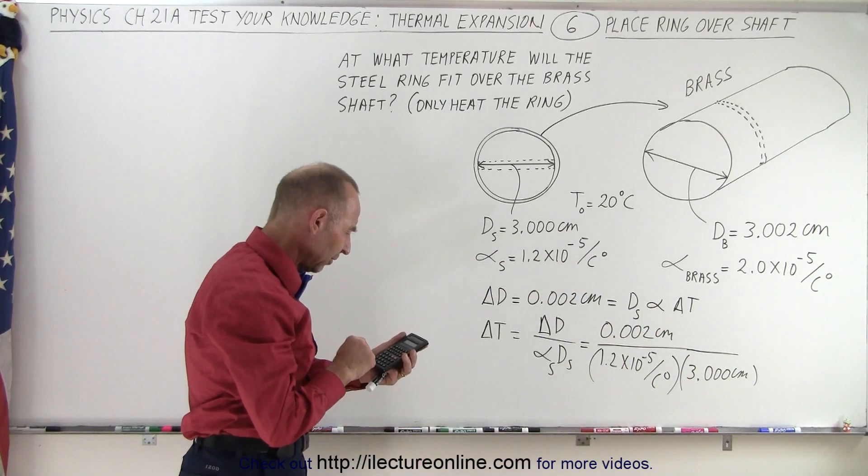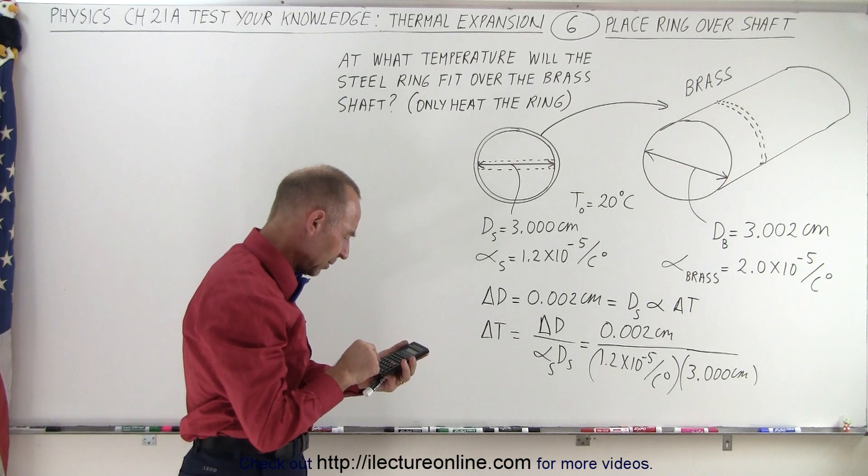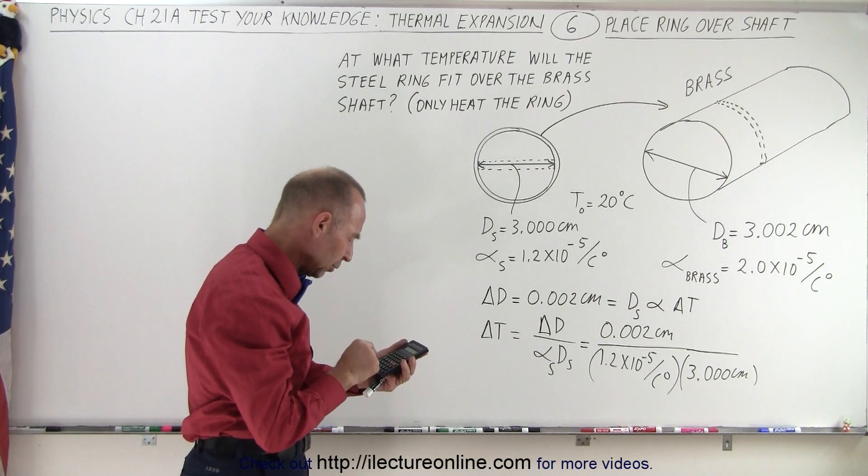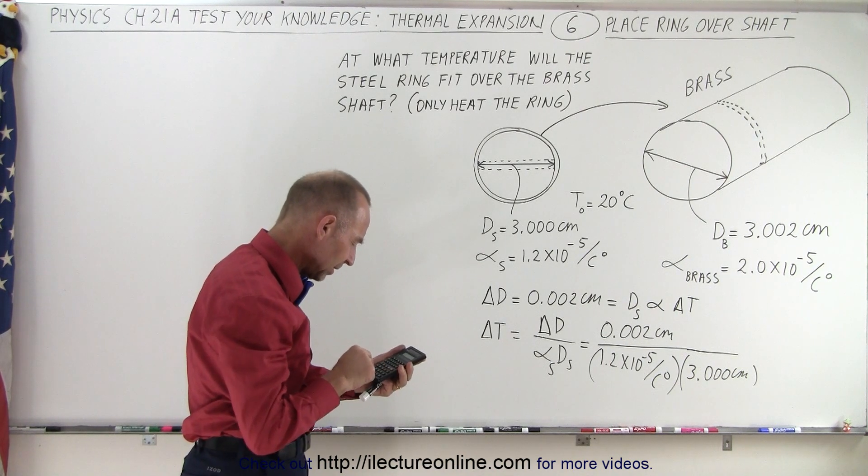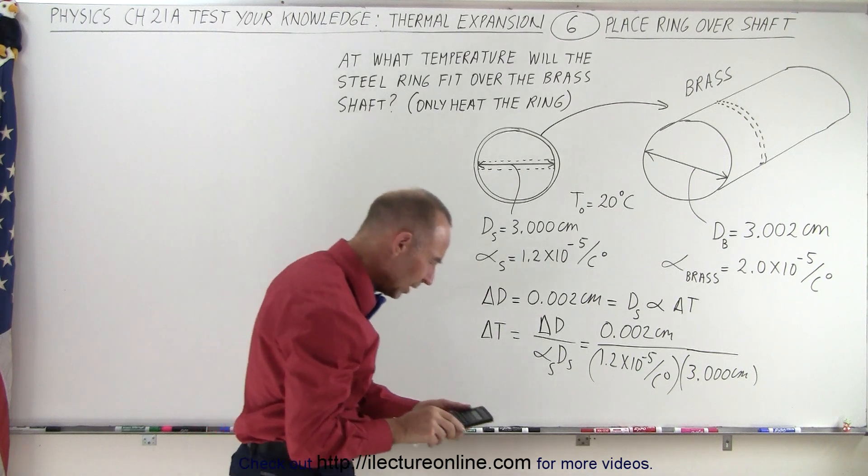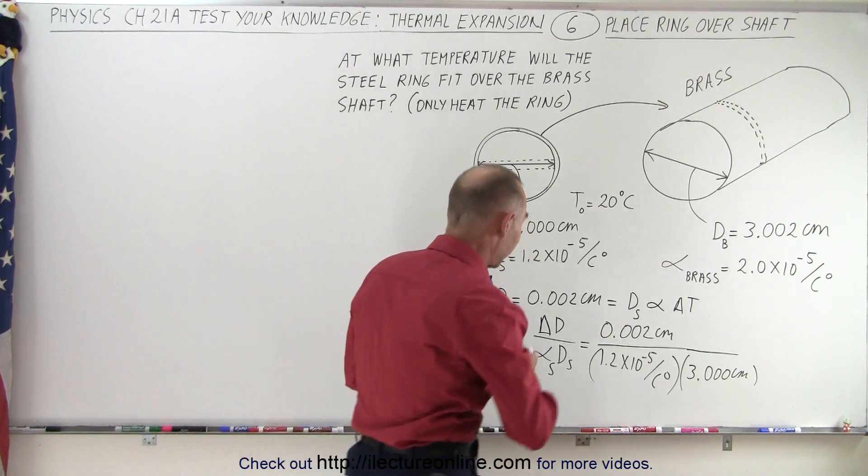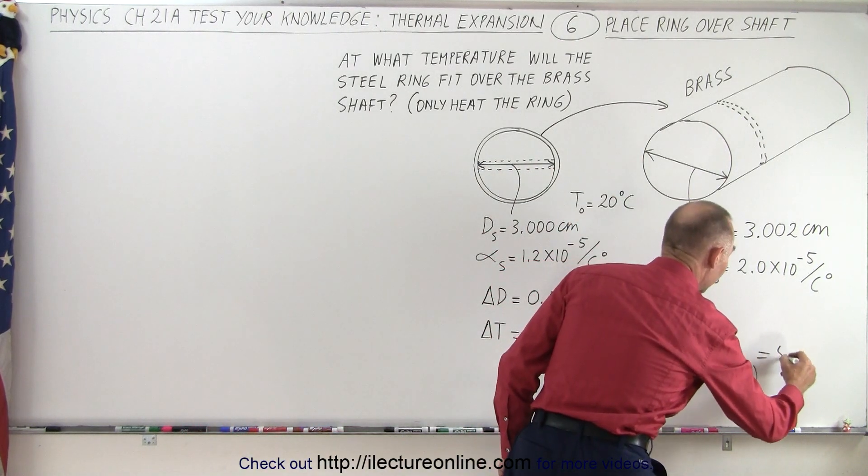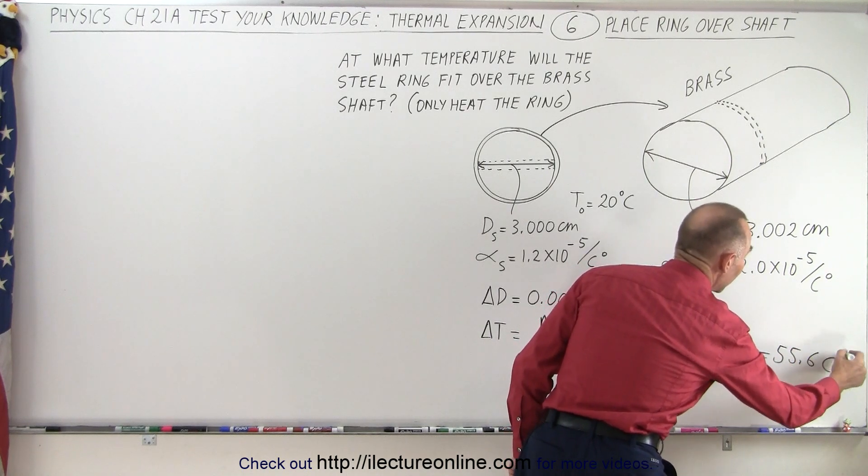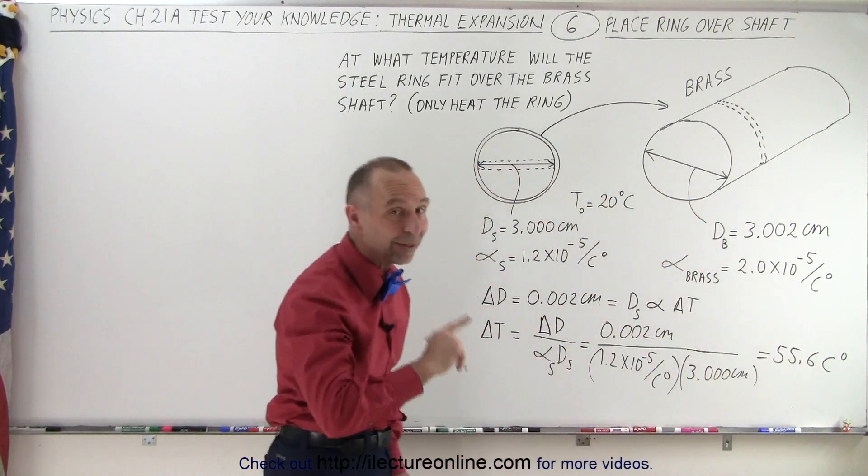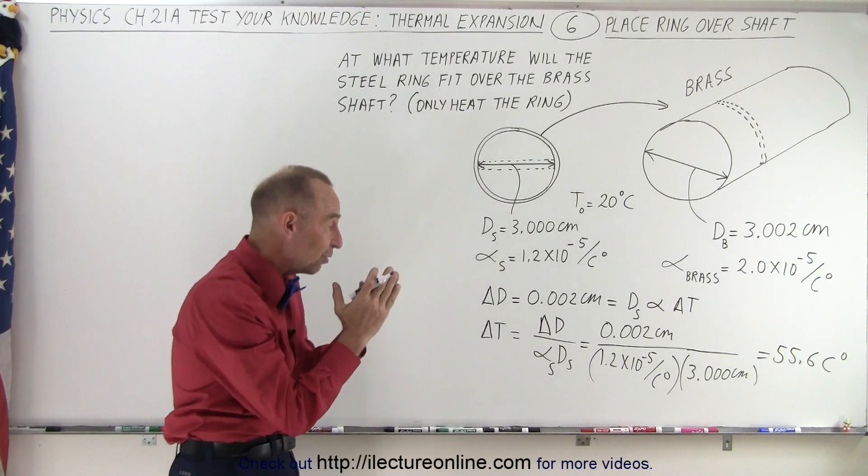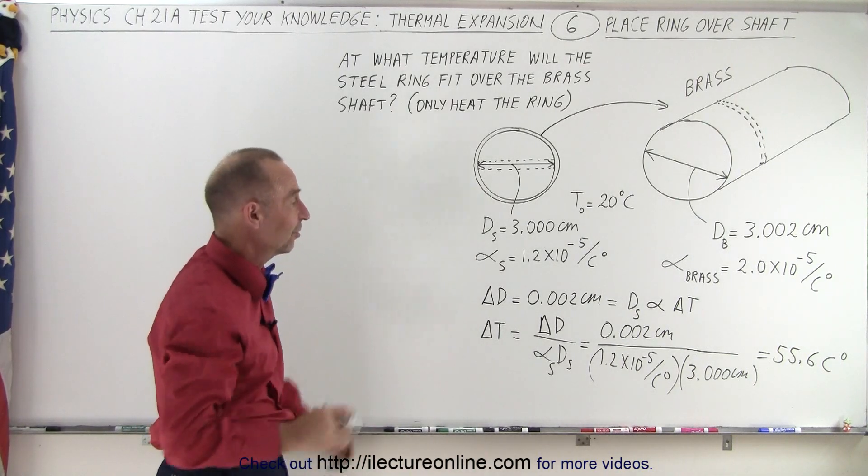Okay, 0.002 divided by 3 divided by 1.2×10^-5 equals, and it looks like we need about 55.6 degrees, so that's equal to 55.6 Celsius degrees. Notice that's not degree Celsius, that's Celsius degrees, which is a delta temperature, a difference in temperature.